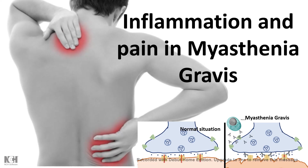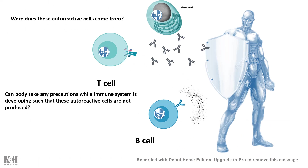In myasthenia gravis, the situation is the same — autoreactive B cells produce antibodies against the post-synaptic receptor, leading to abnormalities in the neuromuscular junction and severe muscle pain and inflammation. All these examples tell us that when the immune system turns against us and becomes rogue, the situation could be detrimental. There should be some safeguard mechanism to protect our body from this kind of situation.